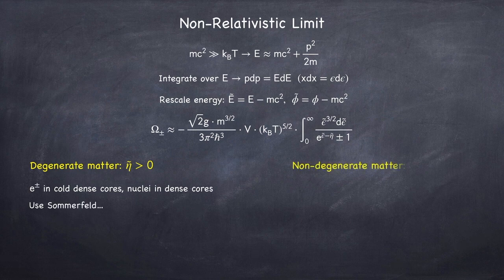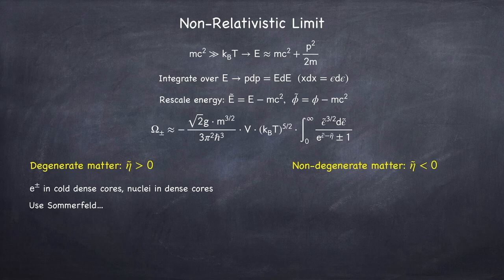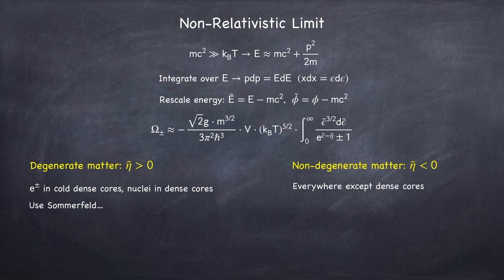For non-degenerate, non-relativistic matter, we have eta tilde less than zero. And this basically applies to all matter everywhere except for in dense cores, with the exception of photons as their rest mass is zero.